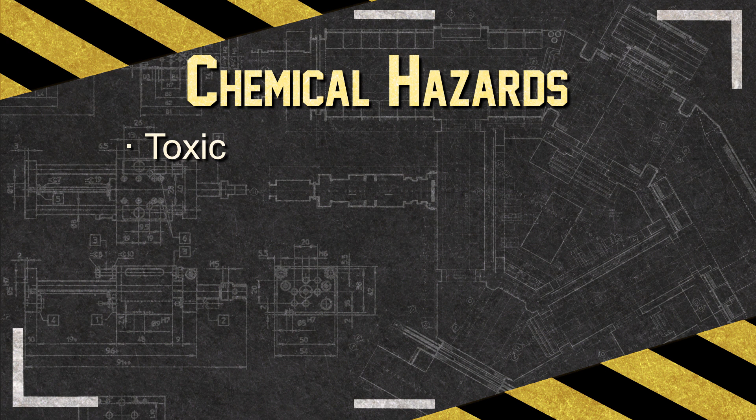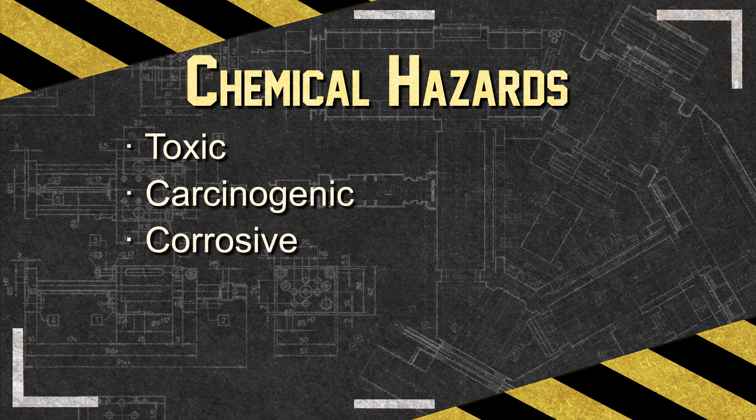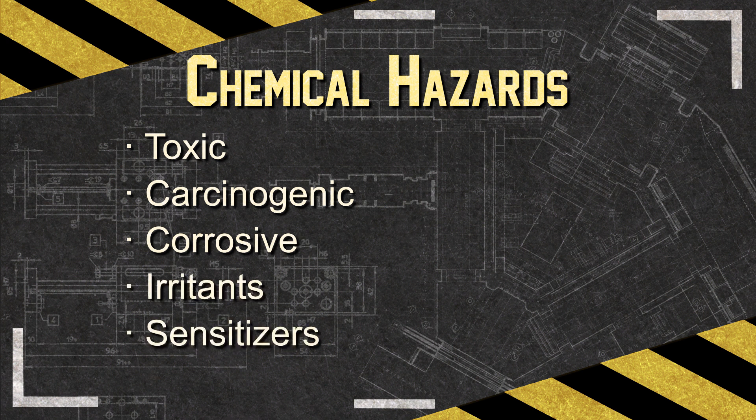There are toxic chemicals that can have a poisonous effect on a person. There are carcinogenic chemicals, believed to cause cancer after exposure. There are corrosive chemicals, causing visible destruction or alterations. There are irritants, chemicals causing an inflammatory effect. And sensitizers, chemicals causing an allergic reaction in tissues.